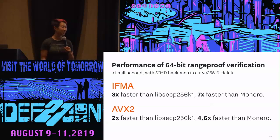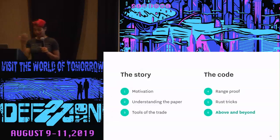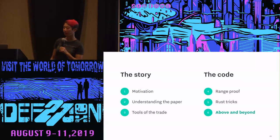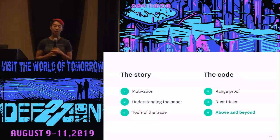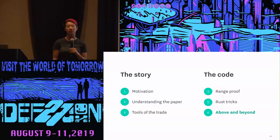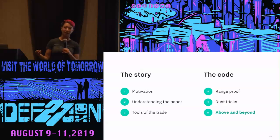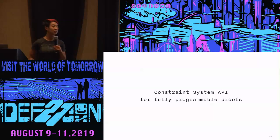The end result is extremely good performance. For a 64-bit range proof, we're able to do verification in less than one millisecond. With IFMA, we're three times faster than LibSecP and seven times faster than Monero — basically the state-of-the-art range proof. This performance results from using Rust, using iterators, using the Ristretto prime order group, and many other little performance tweaks. So we've implemented this range proof and can do confidential transactions on the blockchain — but we didn't want to stop there. Bulletproofs actually allows not only for one specific proof type like the range proof, but for the ability to make a proof over any set of arbitrary statements. We wanted to make a way for people to make their own statements, so we made a constraint system API for fully programmable proofs over the Bulletproofs protocol.